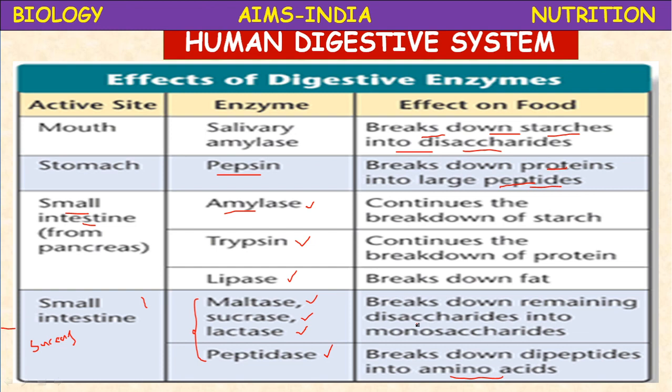Absorption takes place in the small intestine. Villi are the structures that absorb digested food materials (products of digestion) and pass them into the blood. The blood carries digested food materials to all cells of the body. The food is then assimilated, releasing energy. Energy is produced in the process of assimilation in the mitochondria of the cell.